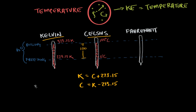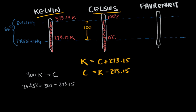As another example, let's convert 300 Kelvin to Celsius. We take that Kelvin value and subtract 273.15, which gives us 26.85 degrees Celsius. Note that the degree symbol is only used for Celsius. We don't use it with the Kelvin scale because instead of calling the units degrees, we just call them Kelvin — so only an uppercase K is needed.